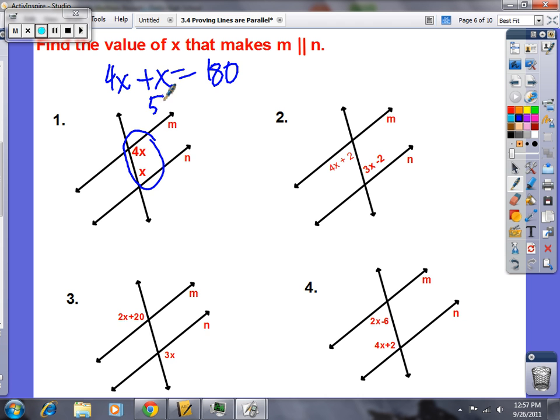If 5X is 180, what's X? Do you see why we did 4X plus X equals 180? Divide by 5, divide by 5. What's 180 divided by 5? So, if X was 36, then they would be consecutive interior angles. They would add the 180 and that would mean you've got parallel lines.